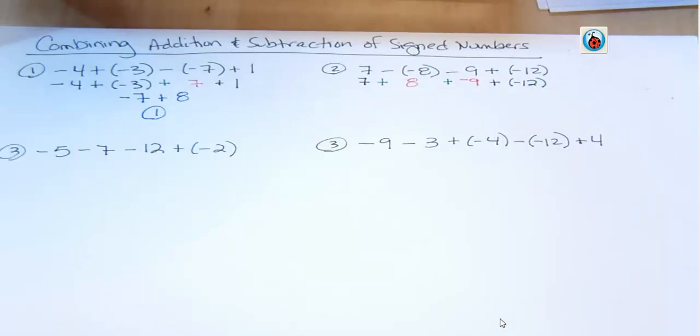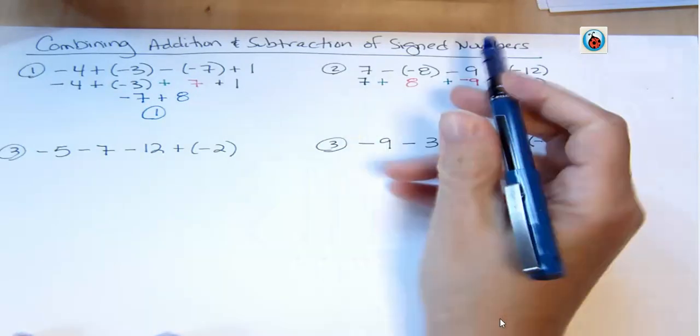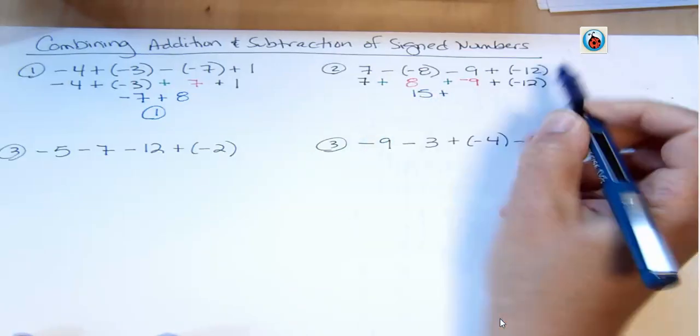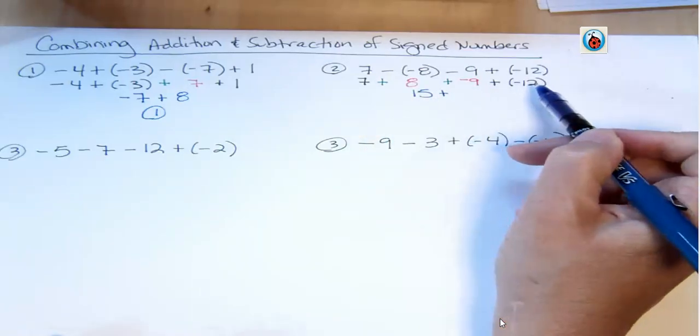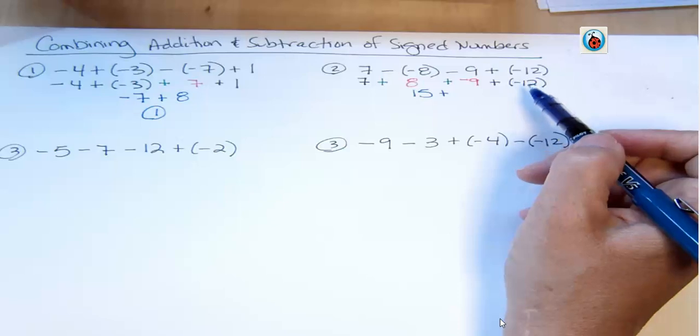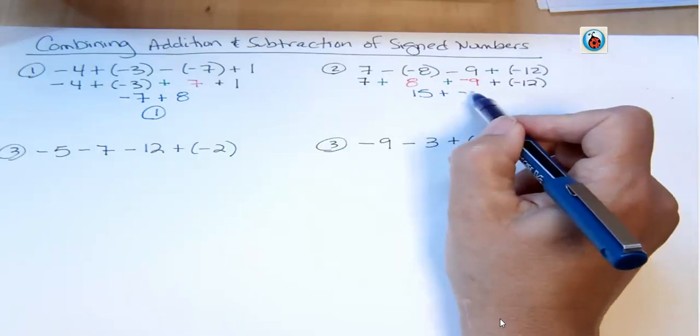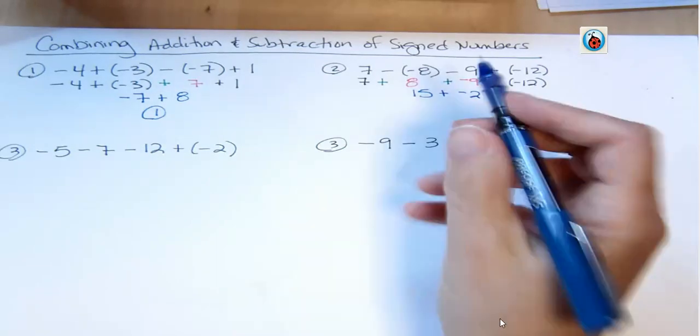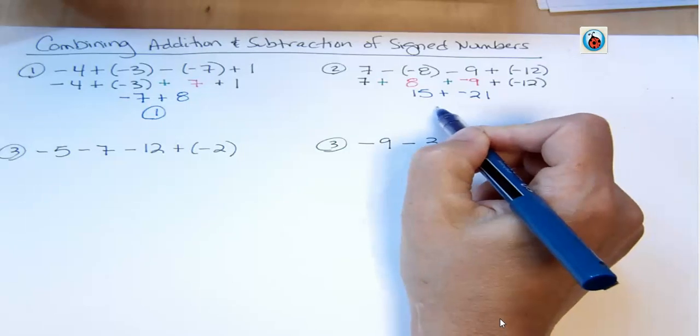And now I can combine my like terms, or not like terms, but my like sign terms. So I have 7 and 8, which is 15, plus negative 9 and negative 12. Well, they're all negatives, so I'm just going to get more and more negatives, and it turns out to be negative 21. And then I ask myself, do I have more negatives or more positives? I have more negatives. I have more negatives by 6, so I have negative 6.